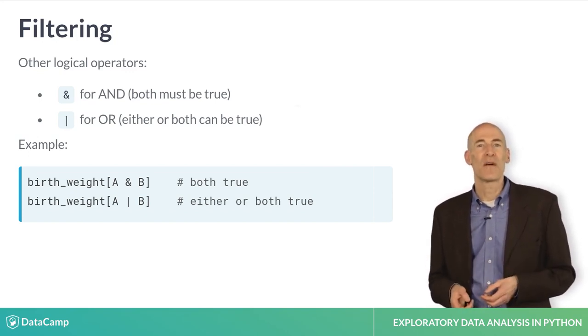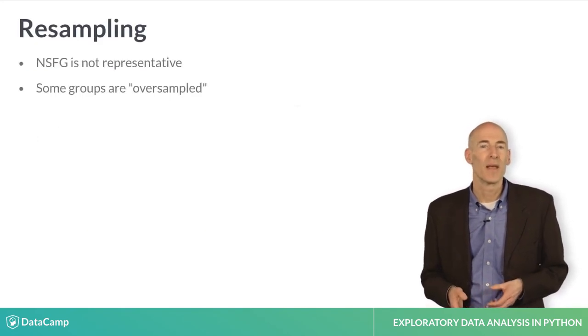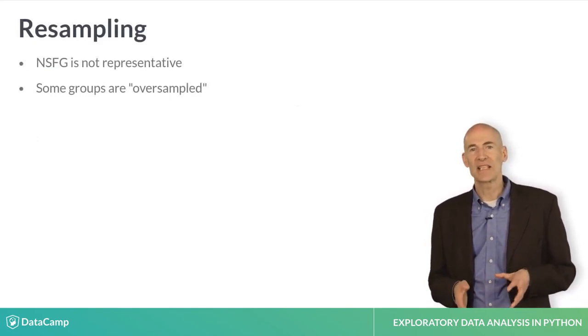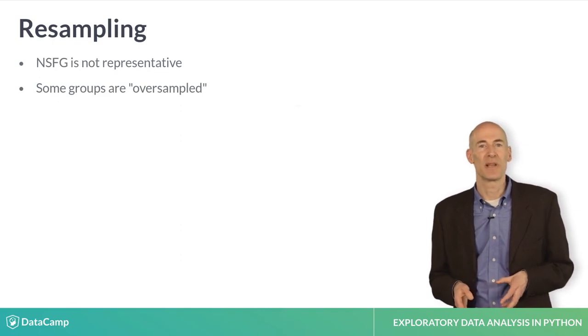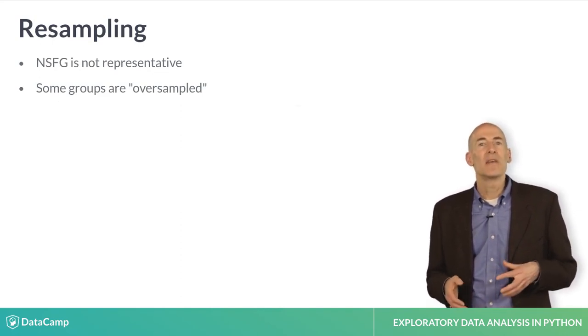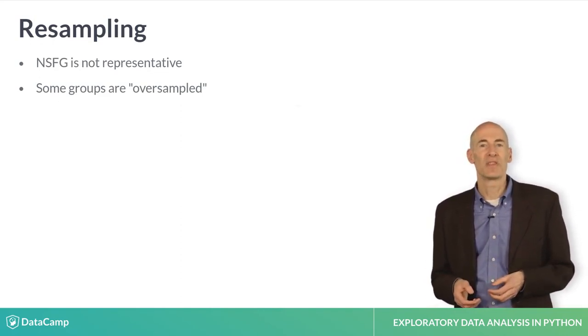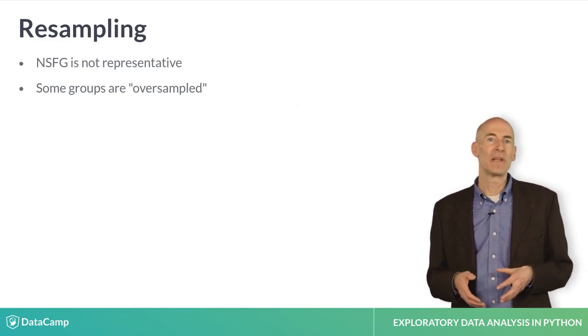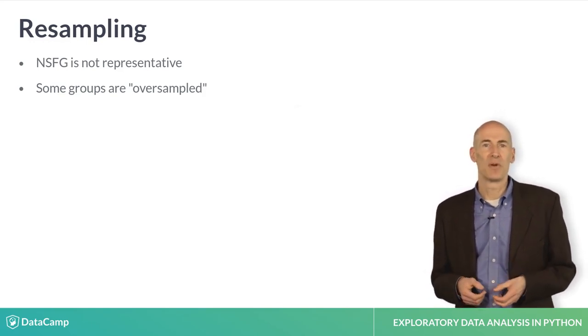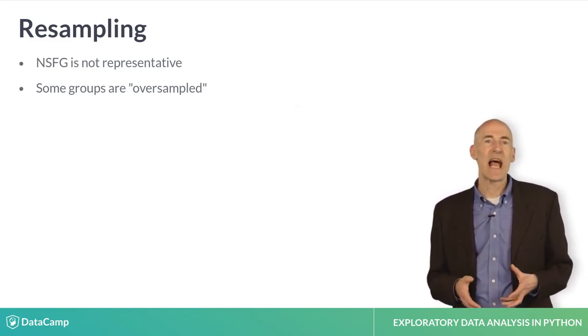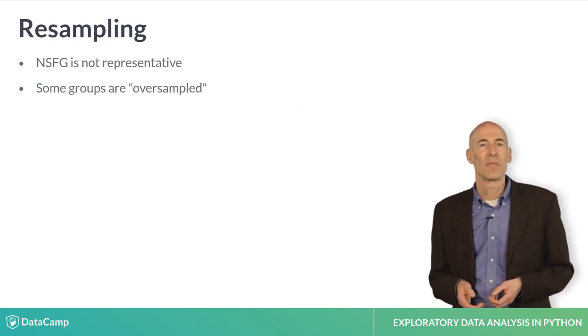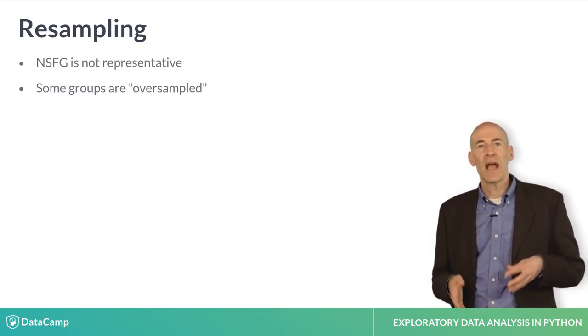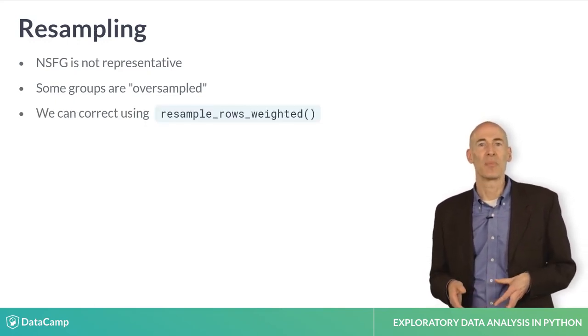There's one more thing we have to do before we can answer our question – resampling. The NSFG is not exactly representative of the US population. By design, some groups are more likely to appear in the sample than others. They are oversampled. Oversampling helps to ensure that you have enough people in every subgroup to get reliable statistics, but it makes the analysis a little more complicated.